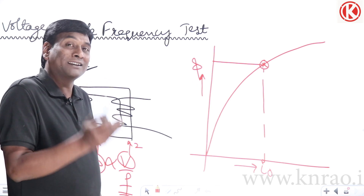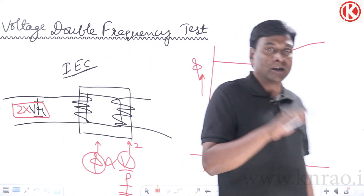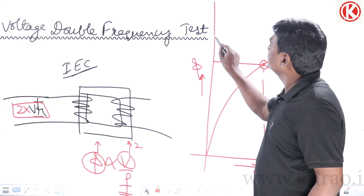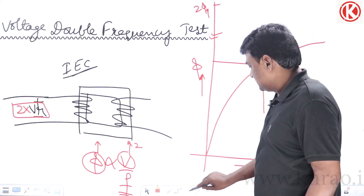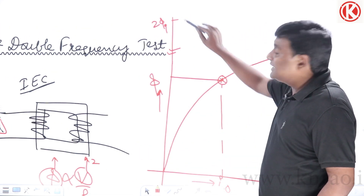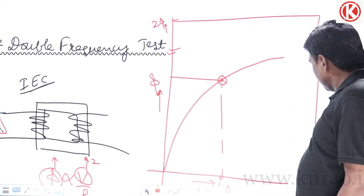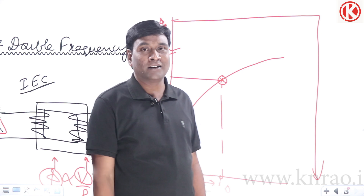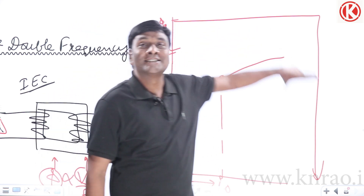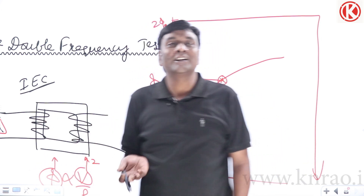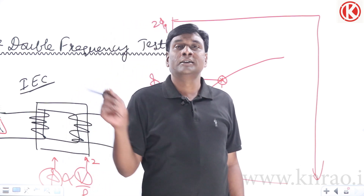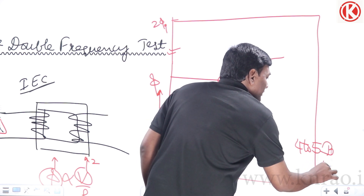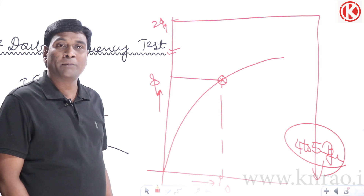If the operating flux is doubled, we know from magnetic inrush analysis that flux can double depending on the time of switch closure. If the normal operating flux is at B-max, doubling it gives 2×B-max — deep into saturation. At that doubled operating flux, the no-load current can become four to five times the full load current. Unlike magnetic inrush which is transient, this would be a steady-state condition during the test, which would surely burn the windings.